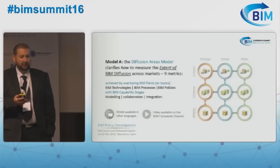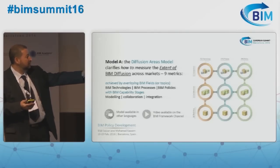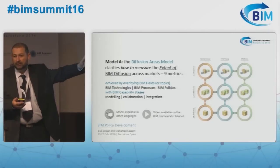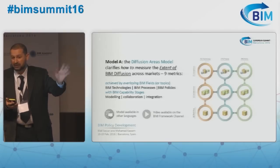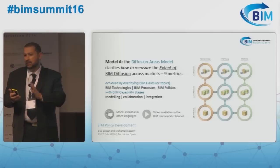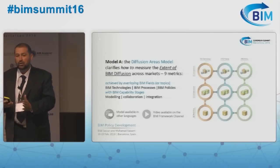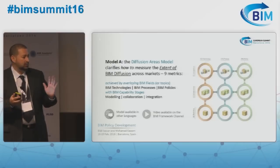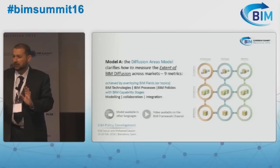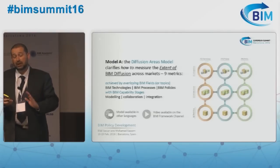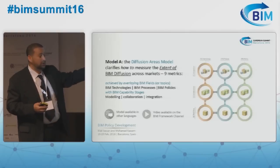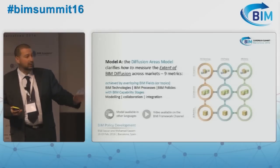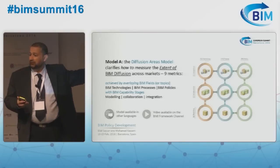The first is called the diffusion areas model. From the previous presentation, we discussed modeling, collaboration, and integration. Now this is mapped against another three topics: technologies, processes, and policies. Anything we discuss about BIM typically either covers a technology, a process of how people work together, or covers standards, protocols, and contracts. To have a comprehensive understanding of the maturity or diffusion of BIM within a market, we need to map these two dimensions. We have nine areas which we can focus on to assess the diffusion of BIM within a market.